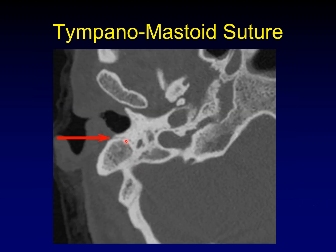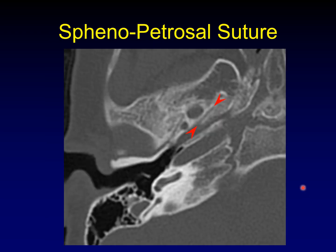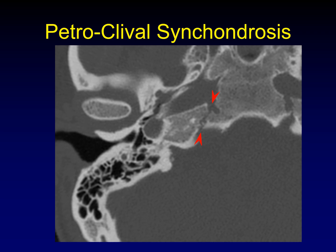Here's the tympanomastoid suture that runs posterior and parallel to the external auditory canal. Here's the tympanosquamous suture — this one's hard to find, and it is running behind the temporomandibular joint but in front of the external auditory canal. The sphenopetrosa suture runs posterior to the foramen ovale and lateral to the eustachian tube. Because this is running along the course of other major anatomic structures like the eustachian tube and the petrous segment of the internal carotid artery, it is frequently mistaken for a fracture. And a crowd favorite: the petroclival synchondrosis, just lateral to the upper clivus, and it's as famous as the origin of clival chondrosarcomas.